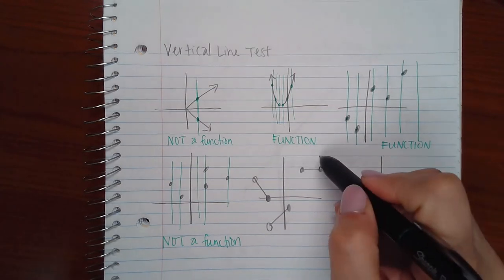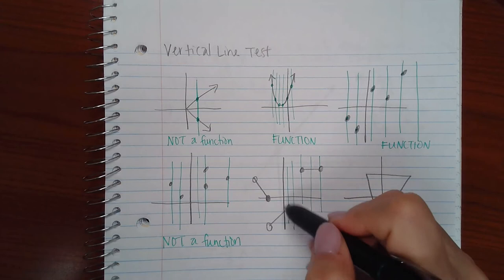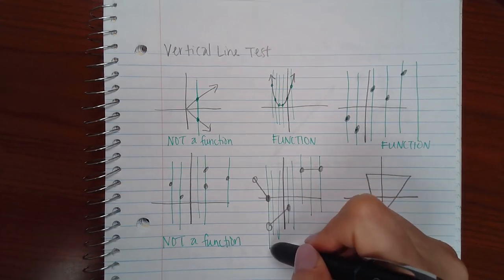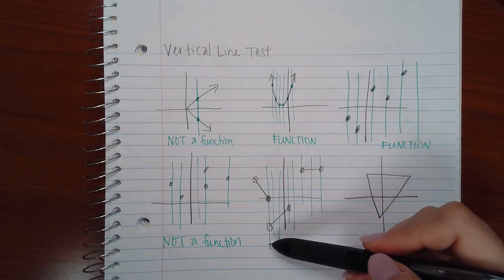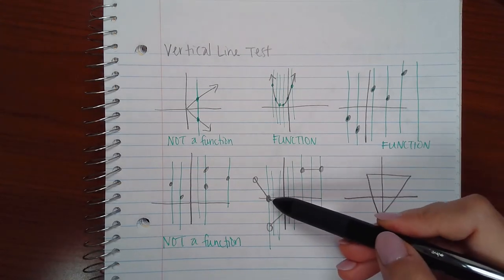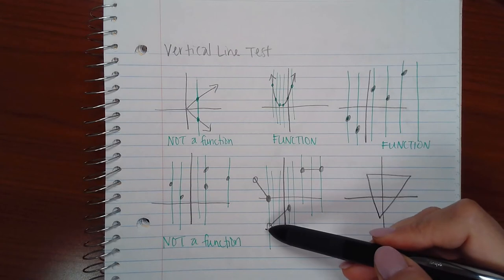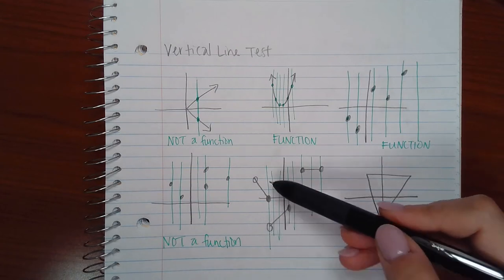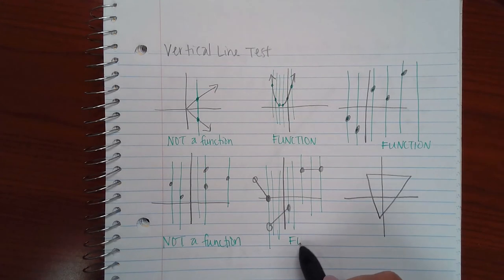Here, if we draw lines here, here, here, we're good. Right? And even here, this vertical line specifically, it touches the graph here because that's a solid dot. However, it does not touch the graph here because this is an open dot, which means there's nothing there. So it really only touches the graph, the vertical line, one time right here. So this is a function.